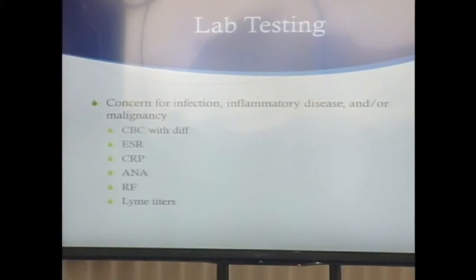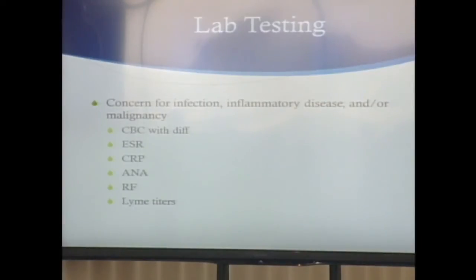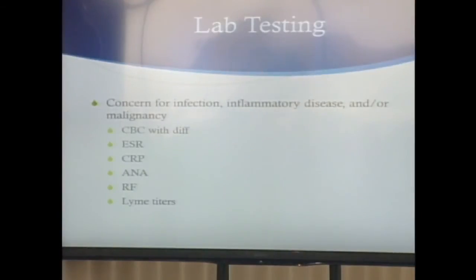For labs, if concerned for systemic problems such as infection, inflammatory disease, or malignancy, tailor accordingly. For infection, typically get CBC with differential, ESR, and CRP. ANA is good for lupus and important because it's associated with chronic uveitis, which could lead to blindness if missed. Rheumatoid factor is only positive in about 15 to 20% of kids with JIA. And Lyme titers if there's any history of travel to endemic areas and an insect bite.